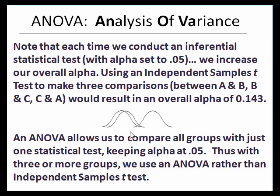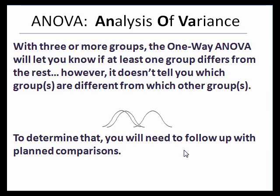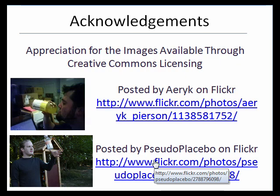The beauty of the ANOVA is it lets us make comparisons between two or more groups — whether three, four, or more — while keeping the overall alpha at 0.05. We don't want to increase our type 1 error. With three or more groups, the one-way ANOVA will tell you if at least one group differs from the rest. The drawback is it doesn't tell you which group differs, so you'll need to follow up with some planned comparisons.